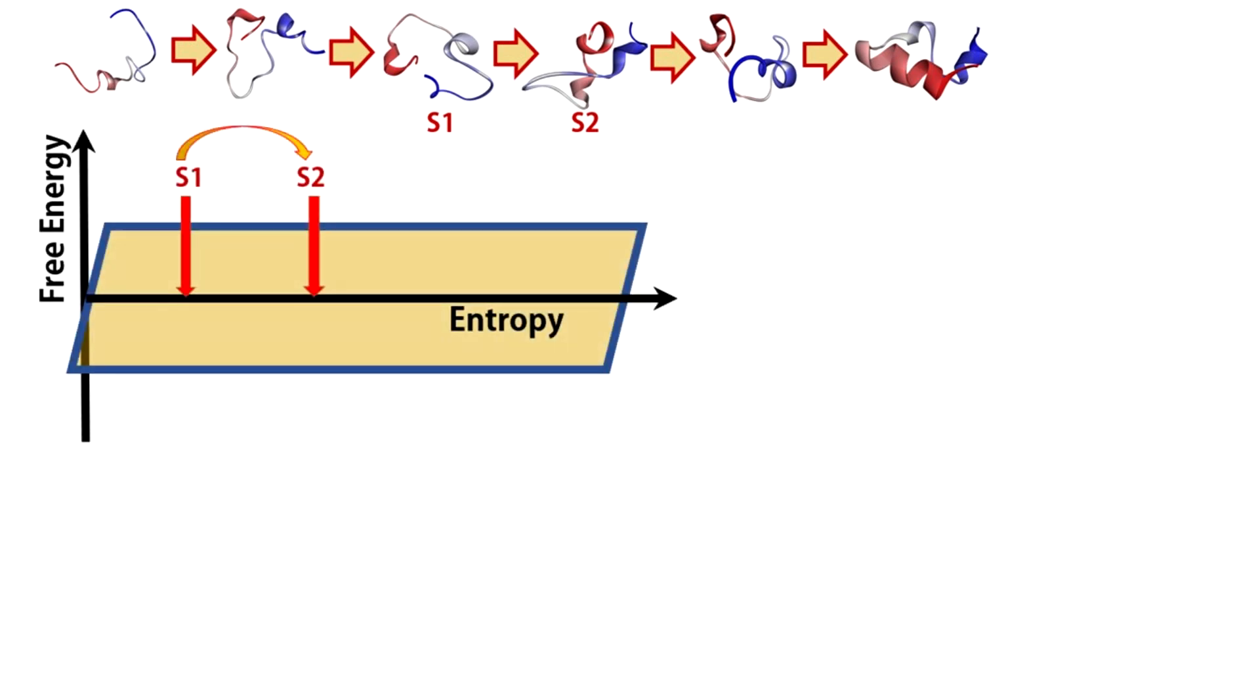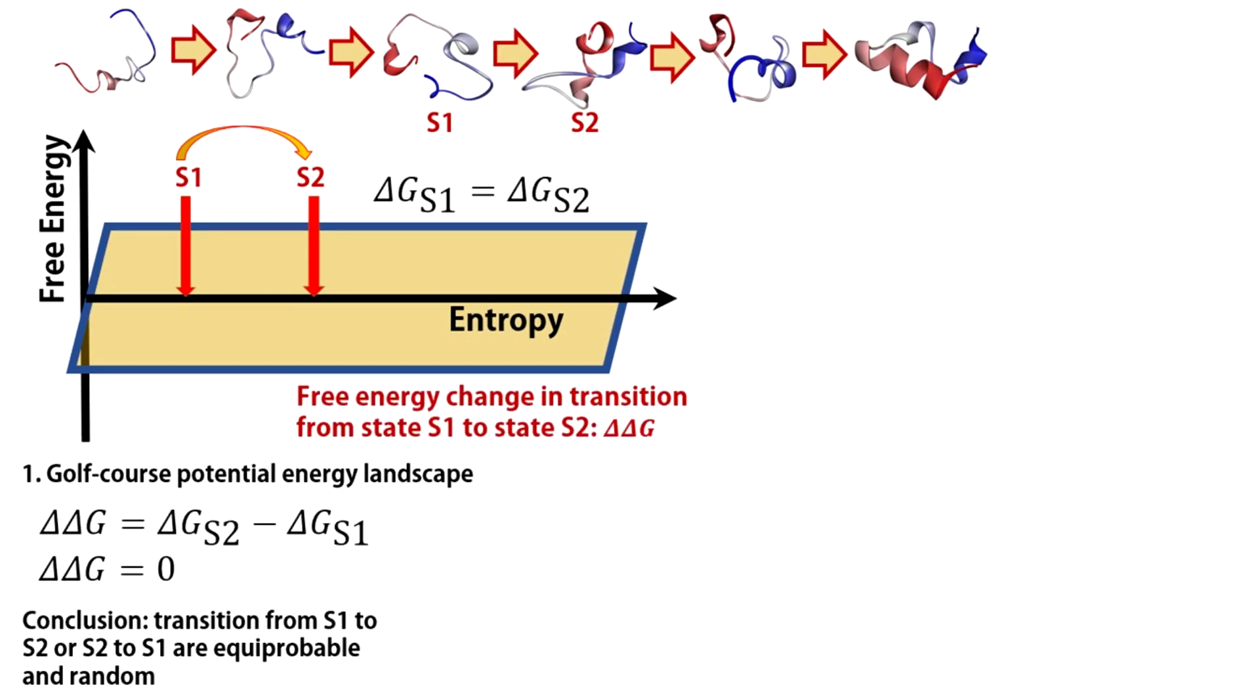Now see this. We have a protein folding scenario. Let us consider any two stages of folding, S1 and S2. In order to reach the native state during folding, S1 to S2 transition is essential. First, we look into this transition for a golf course-like potential energy surface. The free energies of both S1 and S2 are exactly the same. So, the delta G of S1 to S2 transition in this case is zero. Basically, this means a transition from S1 to S2 is not spontaneous and neither is its reverse process.